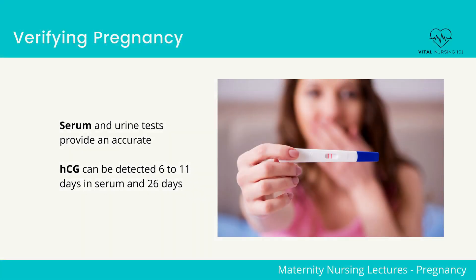Verifying pregnancy. Serum and urine tests provide an accurate assessment for the presence of human chorionic gonadotropin, HCG. HCG can be detected 6 to 11 days in serum and 26 days in urine after conception following implantation.